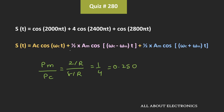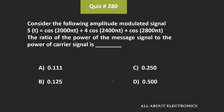Now, here, if someone finds the power of the message signal from the two sideband terms, then it will actually be the sideband power. Because the message signal is getting multiplied with the carrier signal, so from those two terms we cannot directly find the power of the message signal. We actually need to find the exact expression of the message signal, and from that we can find its power. That means the ratio of the power of the message signal to the carrier signal is equal to 0.25. Hence, for the given question, option C is the correct answer.